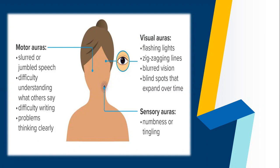Visual symptoms may be positive or negative. The common positive visual phenomenon is the scintillating scotoma — an arc or band of absent vision with a shimmering or glittering zigzag border.